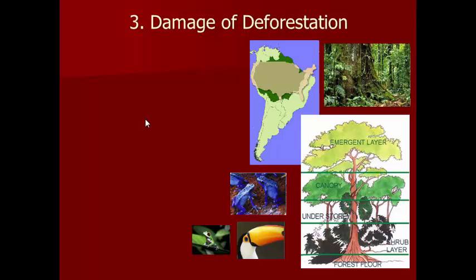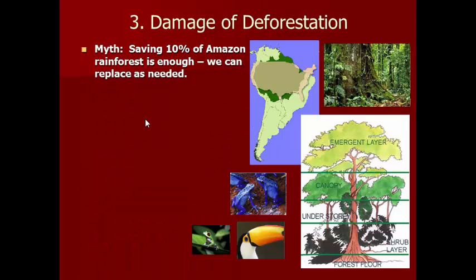Wilson talks about the damage of deforestation. A myth might be that you could save 10% of the Amazon forest and replace it as needed. He makes the point that when you cut a large area down to a smaller area, you're already eliminating different species because different species live in different parts of the whole forest. The Amazon is huge — about as big as the continental United States — and it supports a really diverse range of species, in part because it's so tall that ecosystems exist at different layers based on height.